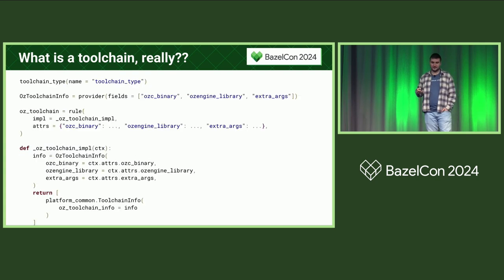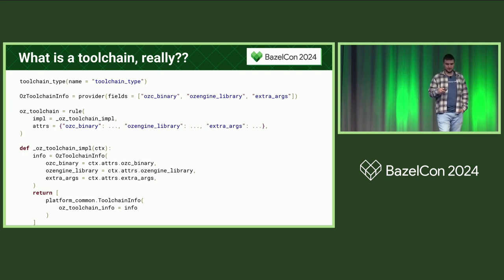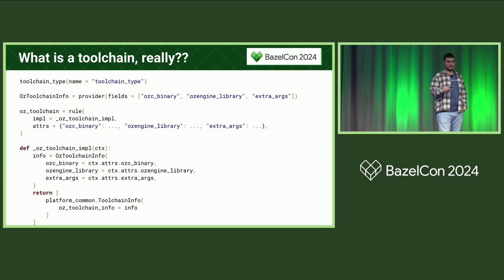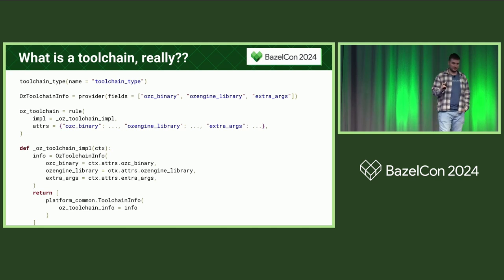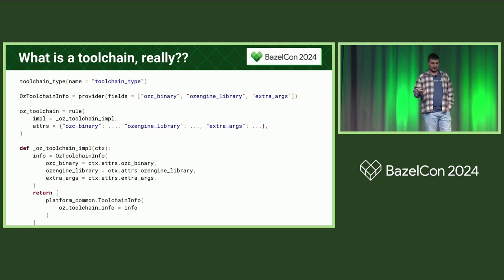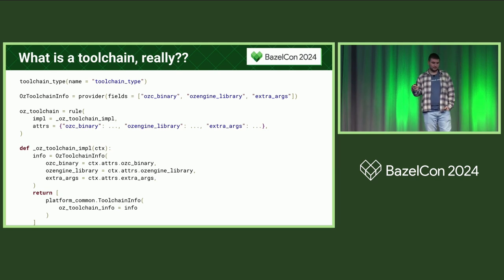So how do you define a toolchain? First, you put a toolchain type into any build file you want. It's important to keep this toolchain type always in the same place, because consumers of your toolchain will use it and people defining new instances will also use it — so it should have a fixed label everyone can depend on. The next part is a provider, which is whatever makes sense for your toolchain: a compiler binary, a standard library, flags you want to pass.